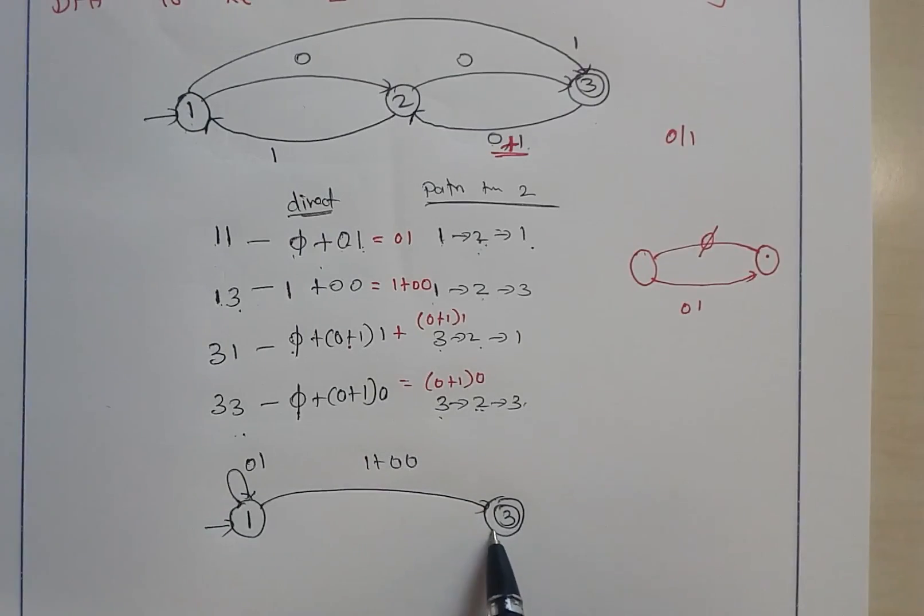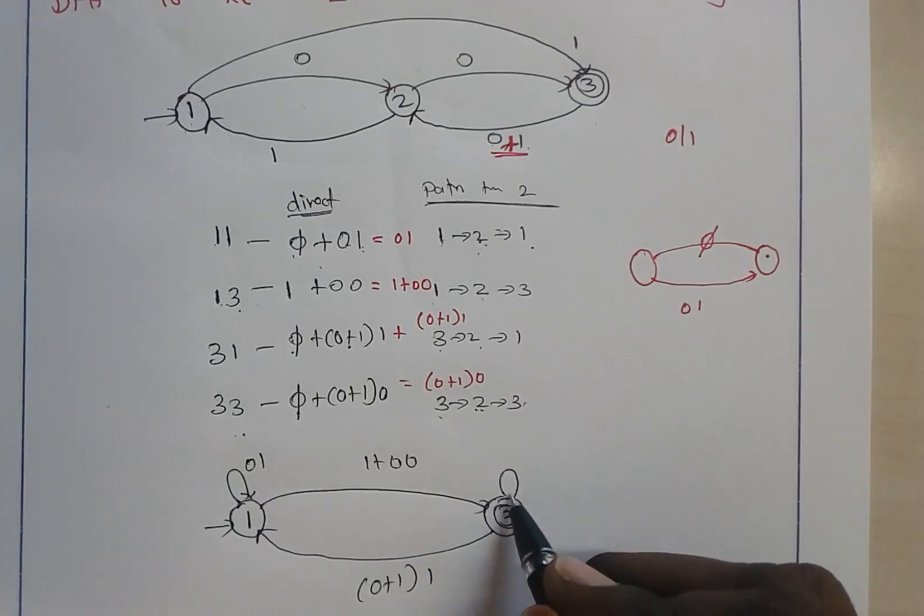From 3 to 1, the transition is given as (0+1) concatenate with 1, and from 3 to itself the transition is (0+1)0.